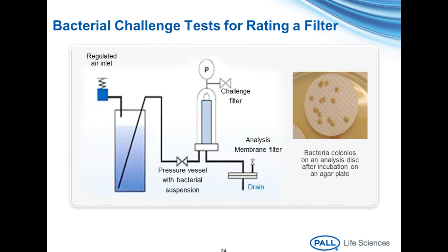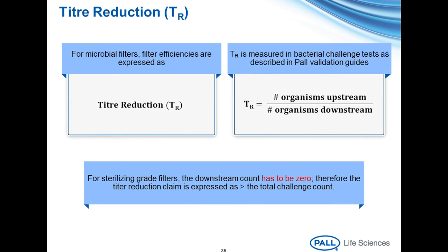This is a performance-based test, and that's why it's important to evaluate performance under your conditions of actual use. For a filter rating test, the bacteria would generally be suspended in a buffer or similar fluid. For the process-specific test, the bacteria would be suspended in the process fluid. There are two possible outcomes to a bacterial challenge test: either absolute retention or some degree of retention, which is a measure of filter efficiency. Filter efficiency is expressed as titer reduction—a ratio of the total number of bacteria in the effluent divided by the total number of bacteria in the influent.